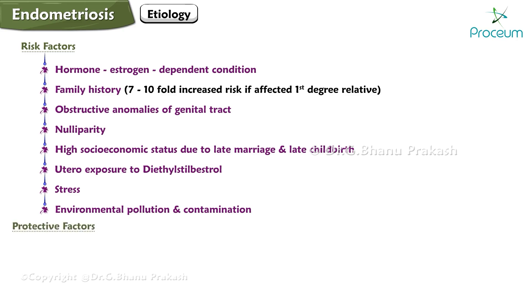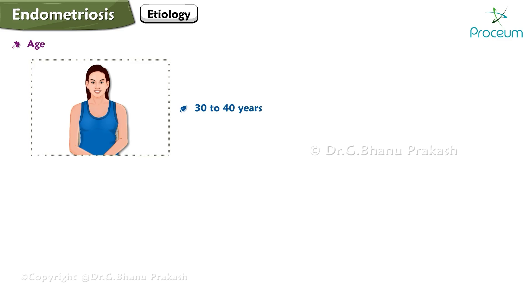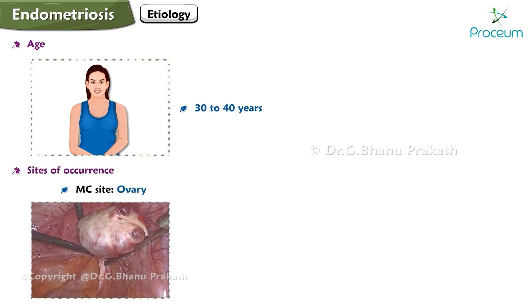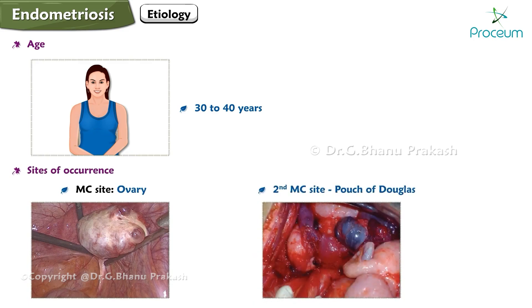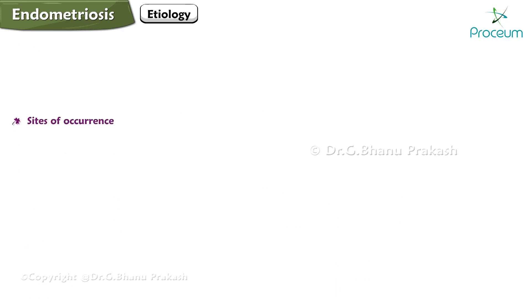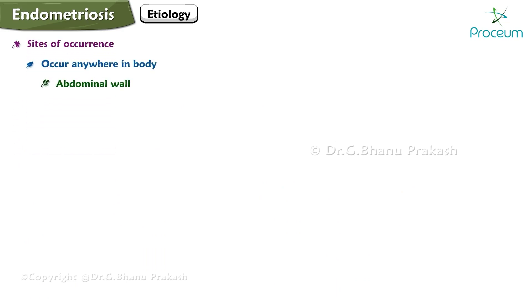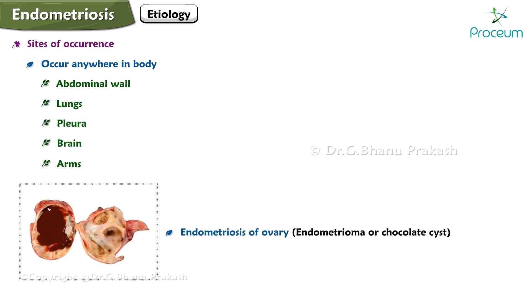Protective factors include regular exercise and smoking. Endometriosis is most common in the 30 to 40 year age group. The most common site is the ovary, the second most common site is the pouch of Douglas, but it can occur anywhere in the body including the abdominal wall, lungs, pleura, brain, and arms.